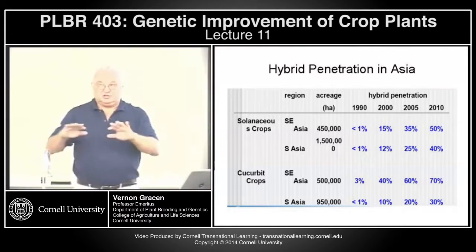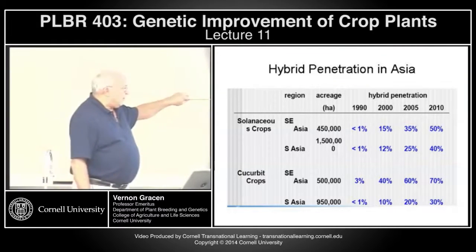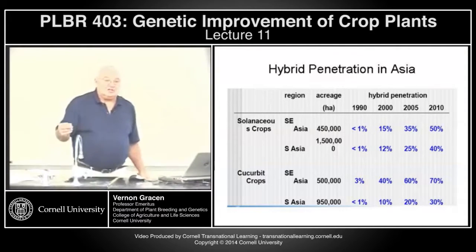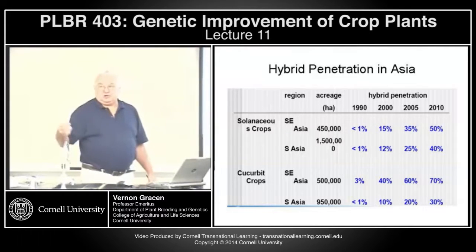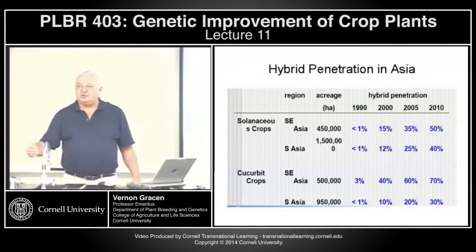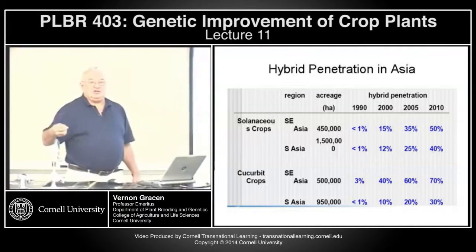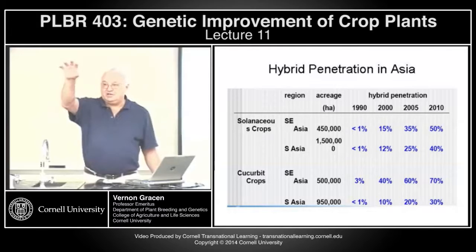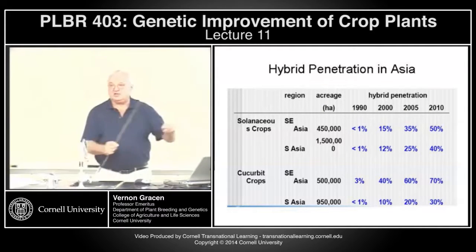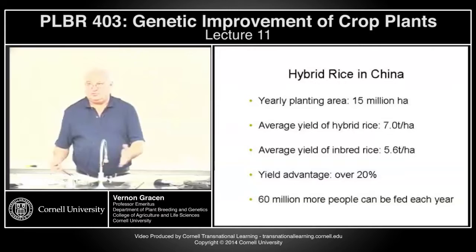Before hybrid maize was introduced in the 1930s, people were planting open pollinated varieties exclusively. From 1866 to 1930, open pollinated variety yields were pretty much flat. Selection for inbreds and hybrids started in the 30s. No one sells inbreds to farmers, but there has developed a seed business called Foundation Seed, where companies do their own private research to develop inbred lines which they sell to other seed companies to produce and distribute hybrids.